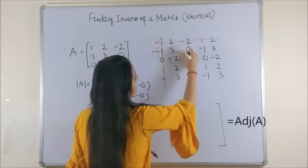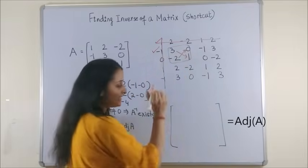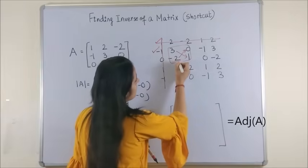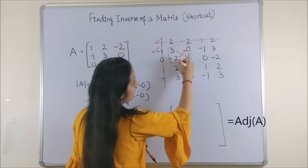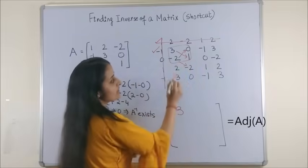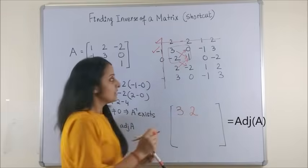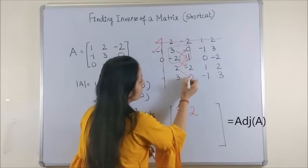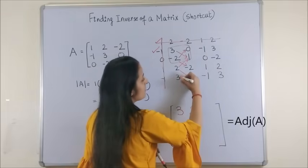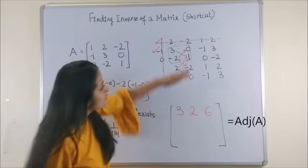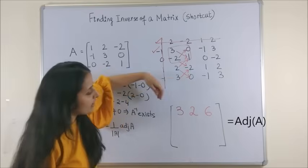3 minus 0 gives us only 3. You write it over here. Next, now consider these 4. Minus 2 into minus 2 is 4, minus 2 is simply 2. Put it here. Next, 2 into 0 is 0, minus of minus 6, which gives us 6. So we did everything column wise, but while writing I put it row wise.